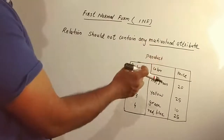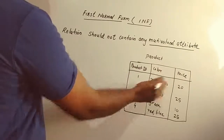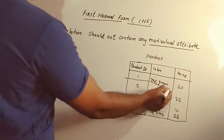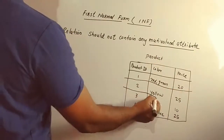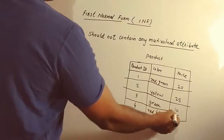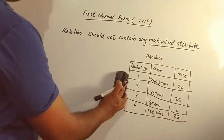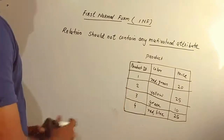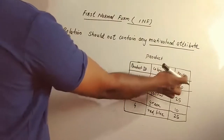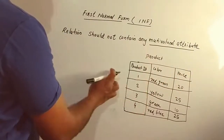We need to intersect the entities in the row and the column body — this is the table. This is the product. We will select the rows and columns. This is the row and columns. This is the product ID. This is the color and price. This is the column, and this column is the row.